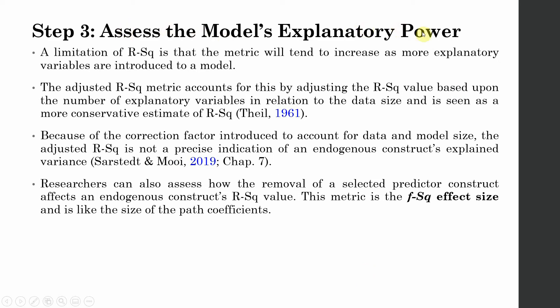A limitation of R-square is that the metric will tend to increase as more variables are added into the model. The adjusted R-square metric accounts for this by adjusting the R-square value based on the number of explanatory variables in relation to the data size and is seen as a more conservative estimate of R-square.